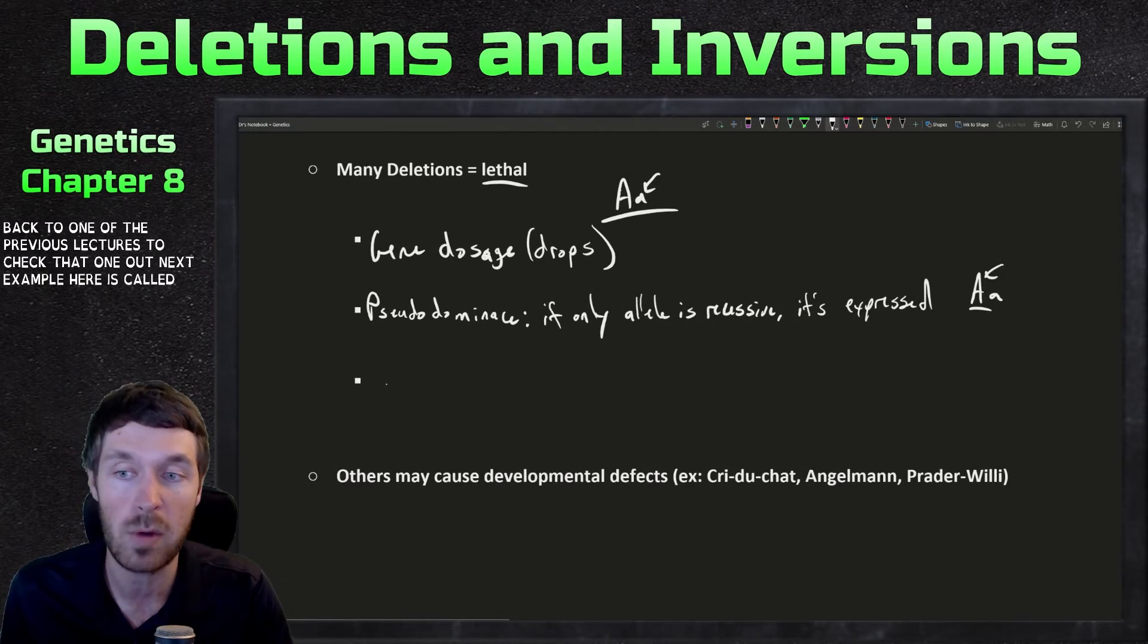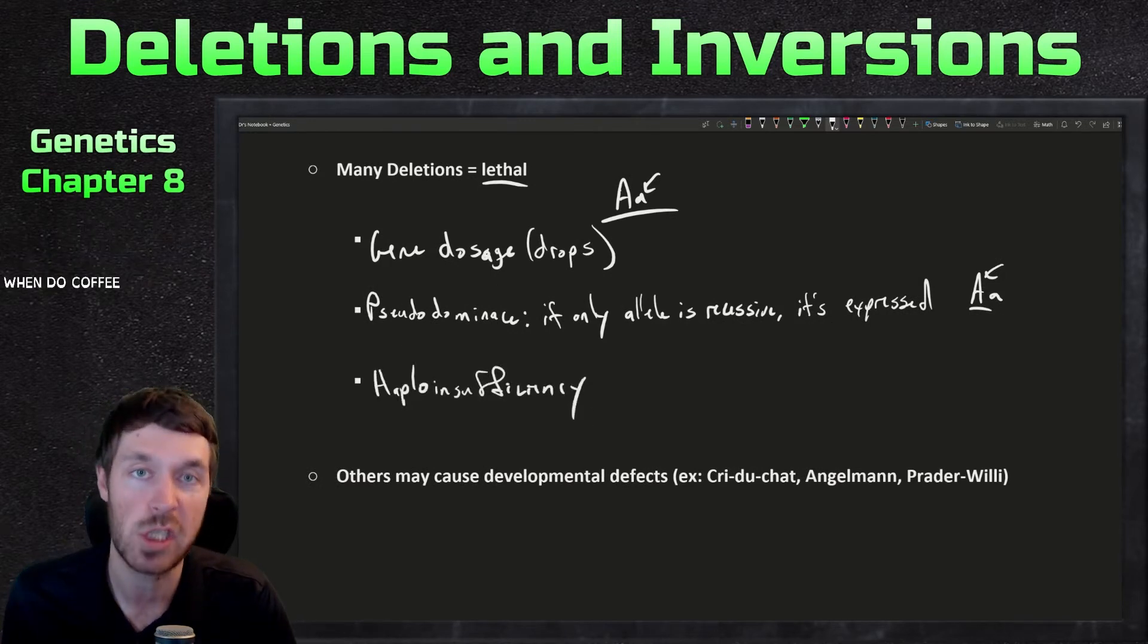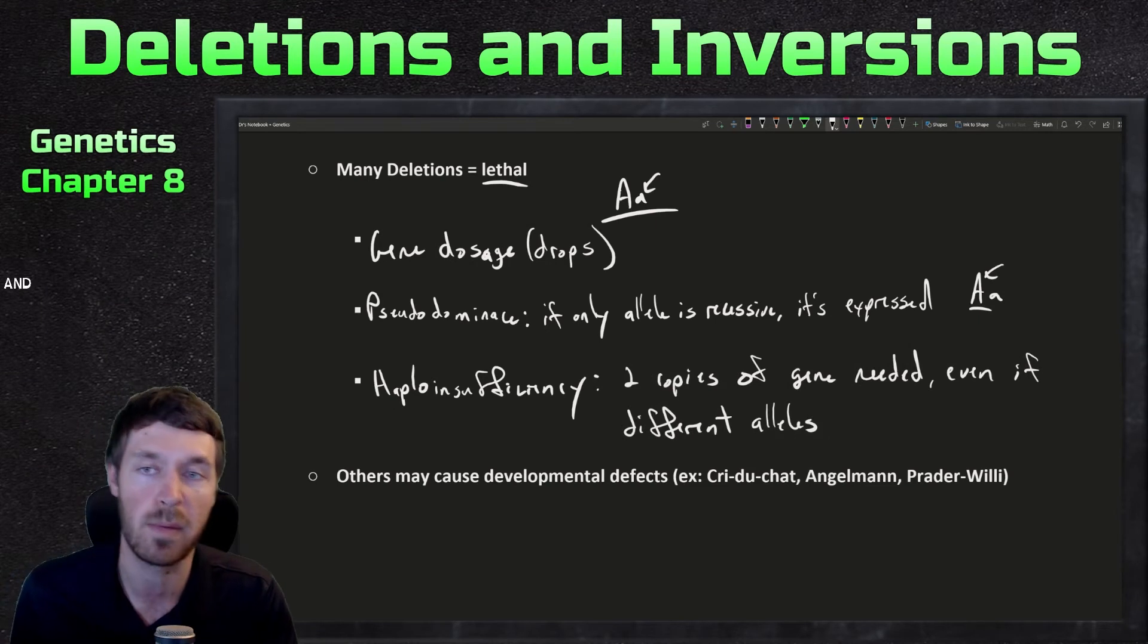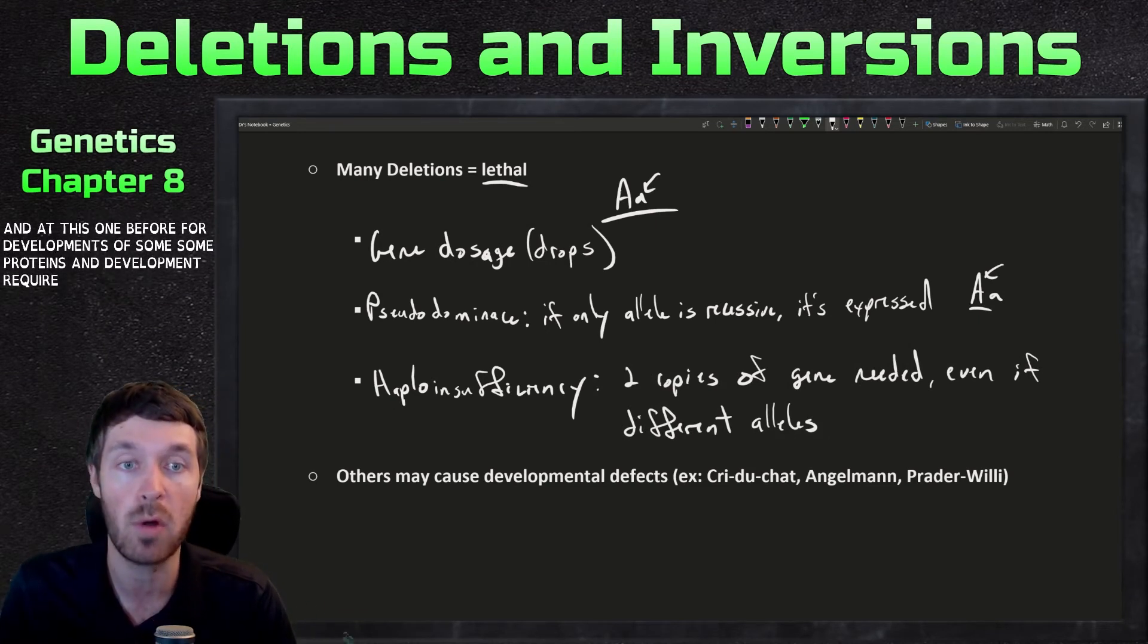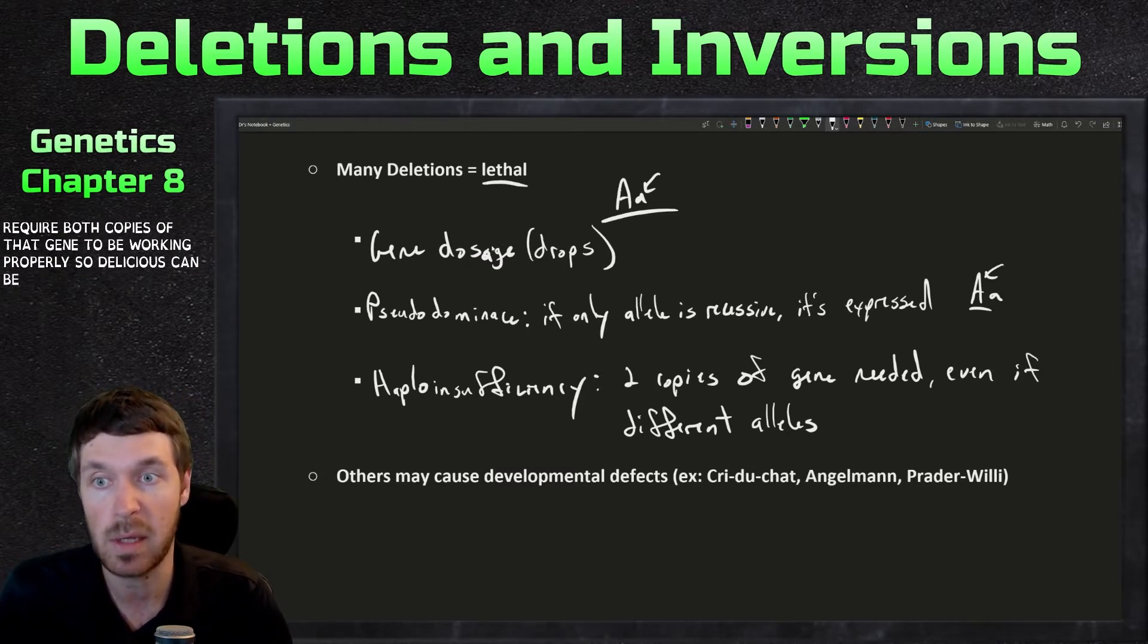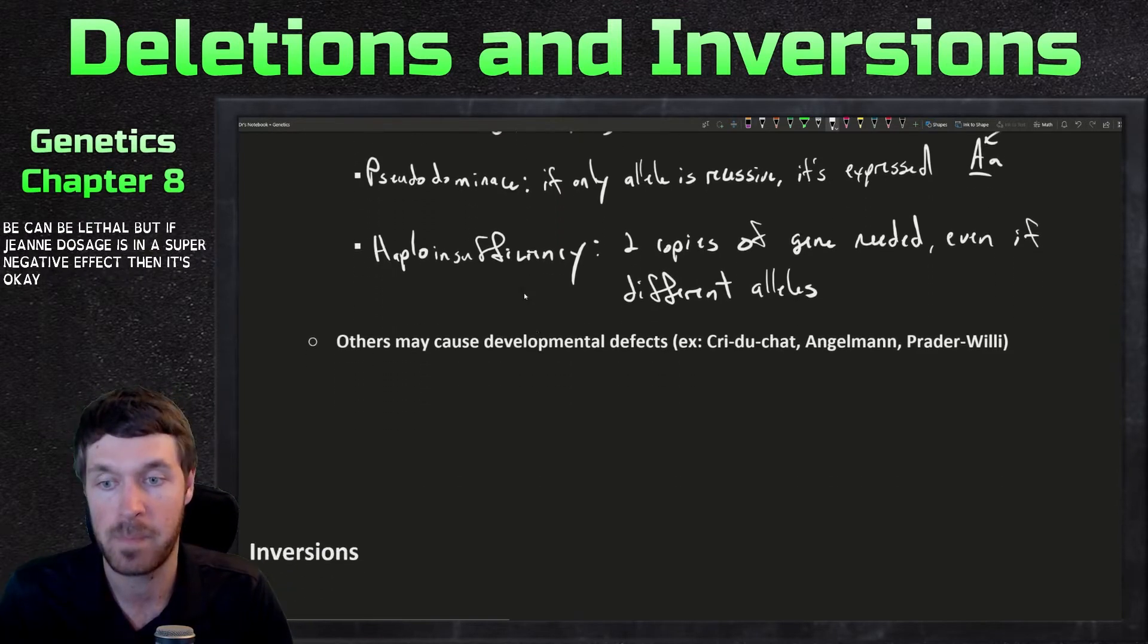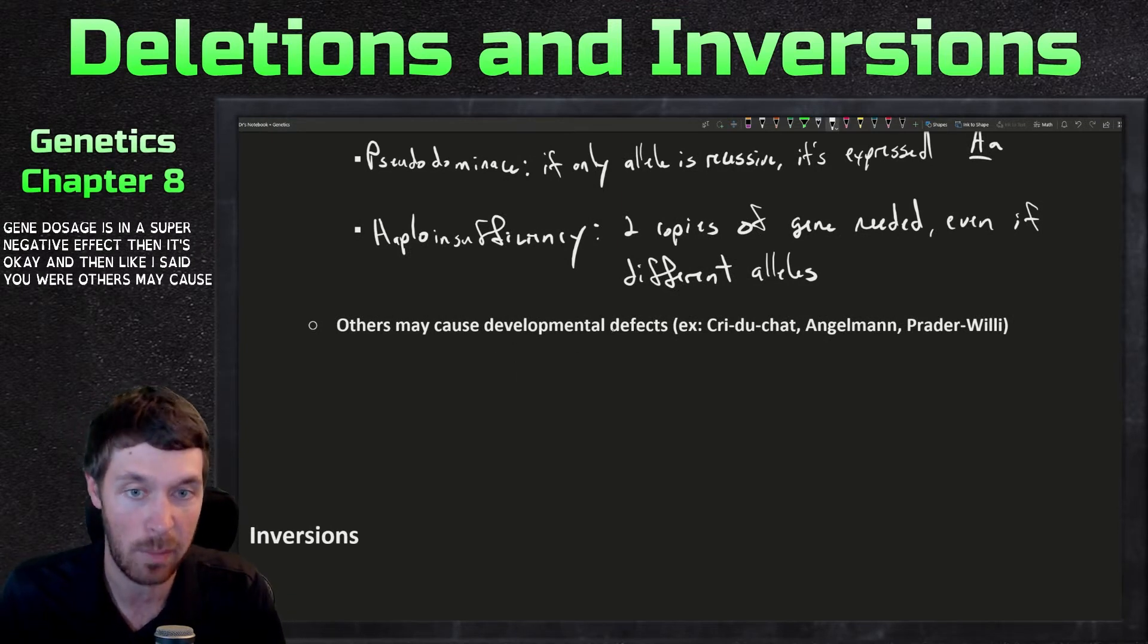Next example here is called haploinsufficiency. This is when two copies of a gene are needed, even if different alleles. And I hinted at this one before for development. So some proteins in development require both copies of that gene to be working properly. So deletions can be lethal, but if gene dosage isn't a super negative effect, then it's okay.